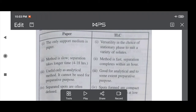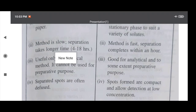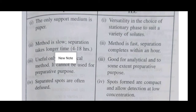The second point: paper chromatography is a slow method and separation takes a longer time — that is 4 to 18 hours. In comparison, thin layer chromatography is fast and separation completes within one hour. So paper chromatography is a slow process and thin layer chromatography is a fast process.